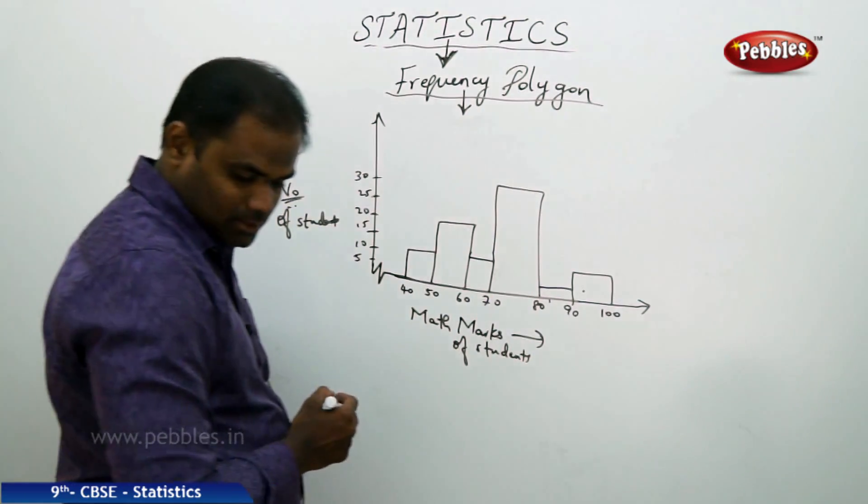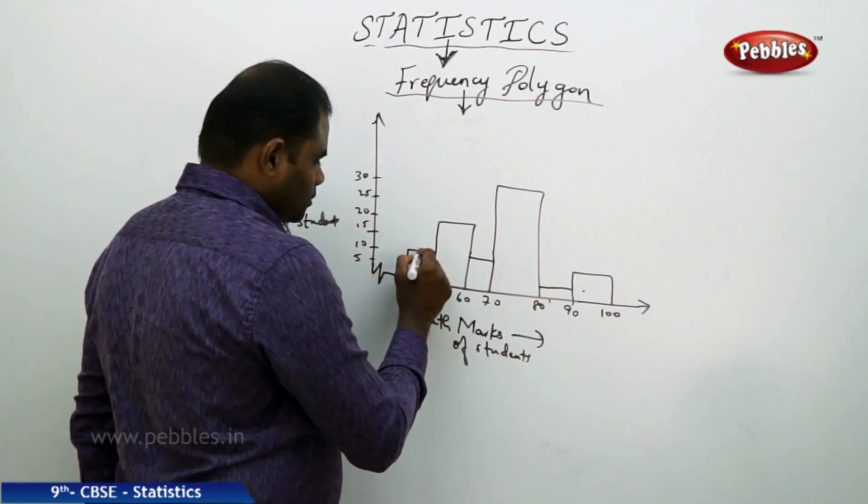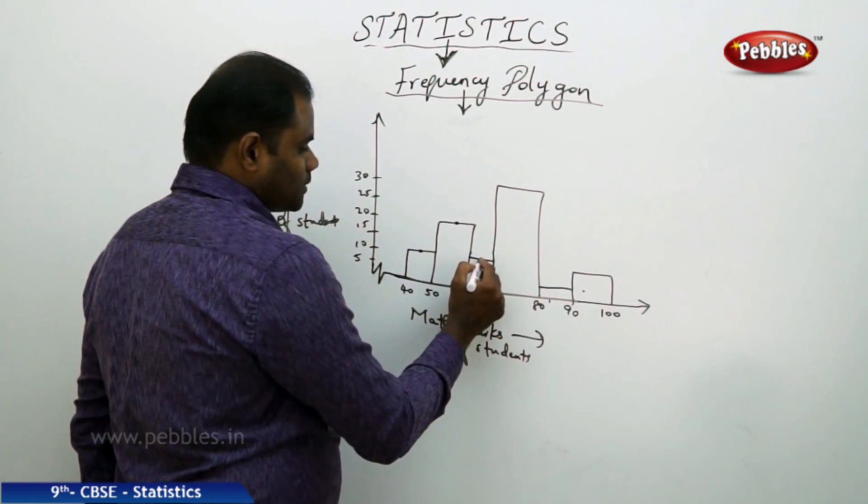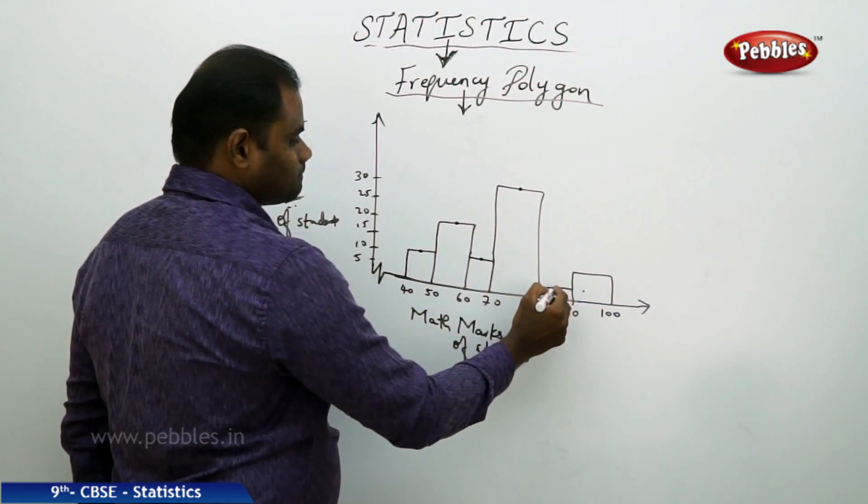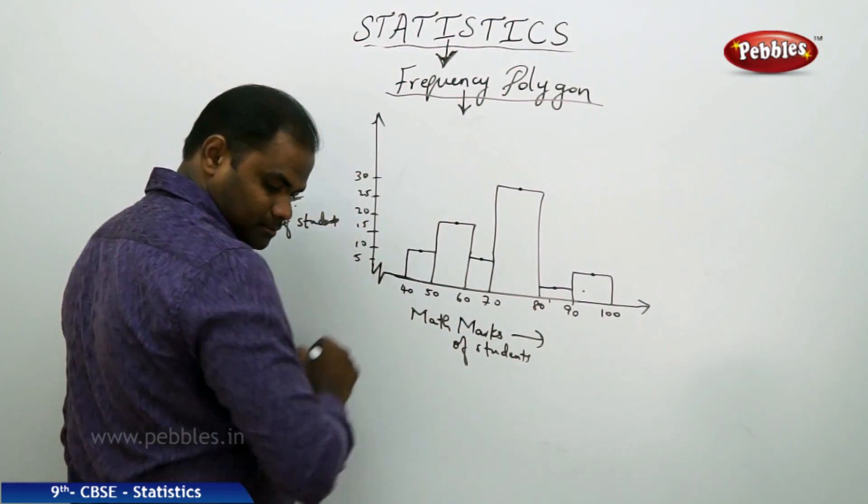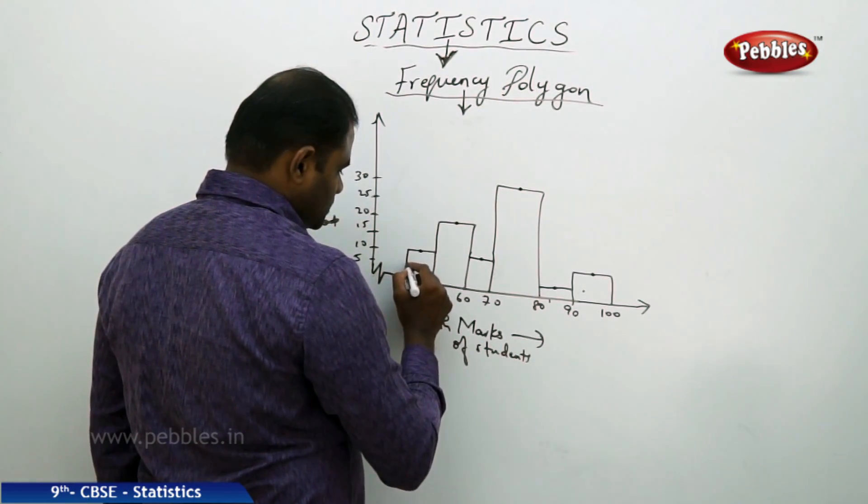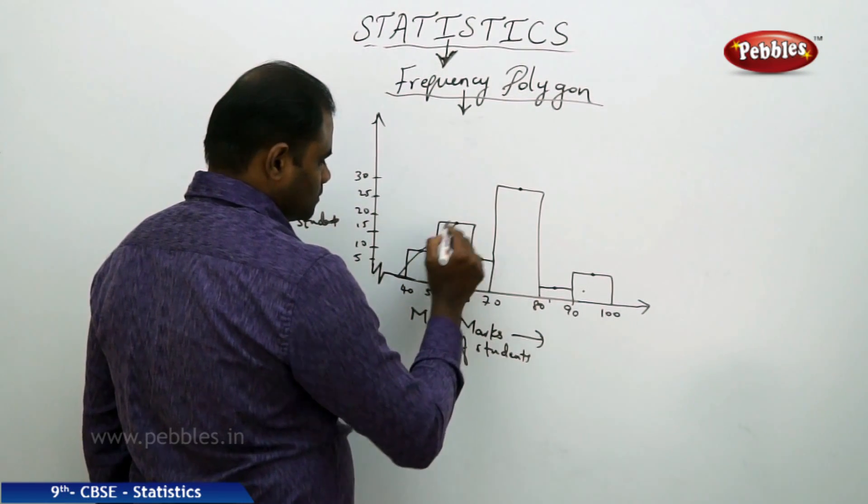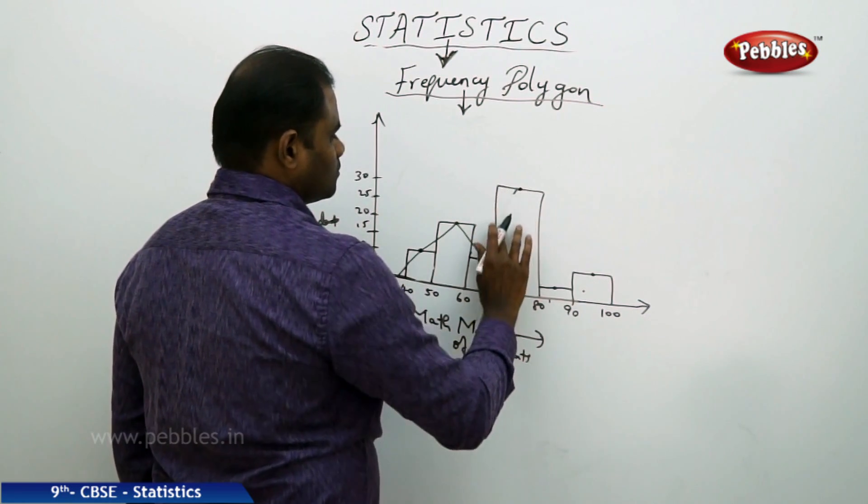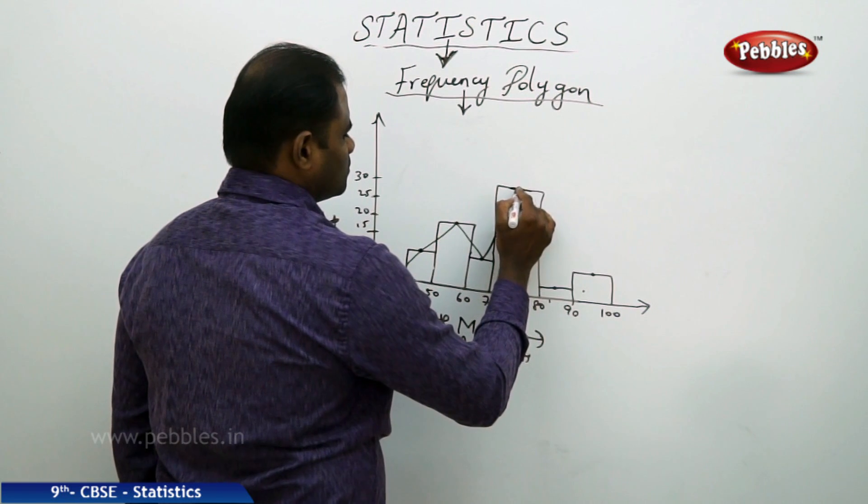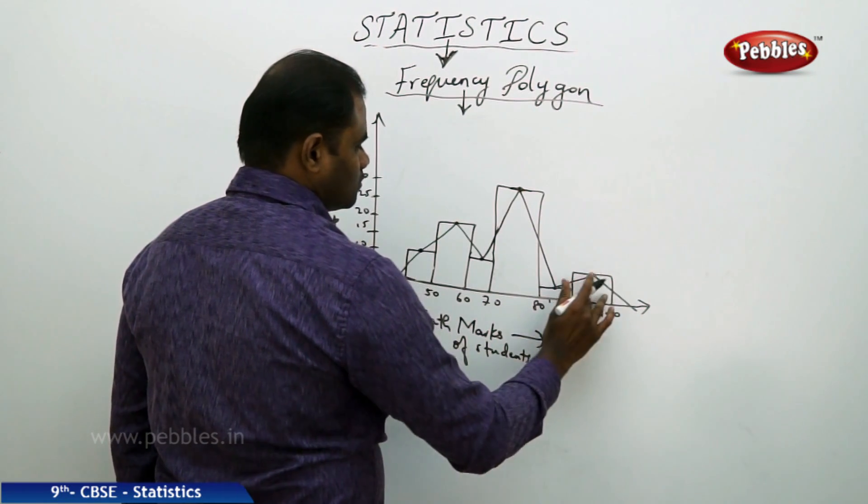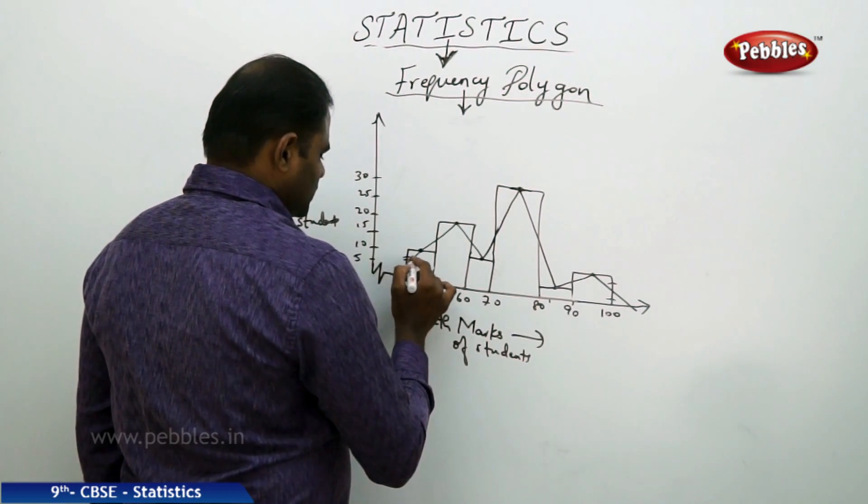So frequency polygon is obtained when I join all the midpoints of the width of the histogram. So I pick all the midpoints here, here, here. So a polygon is obtained if I take exactly a line passing through the middle and cutting here.